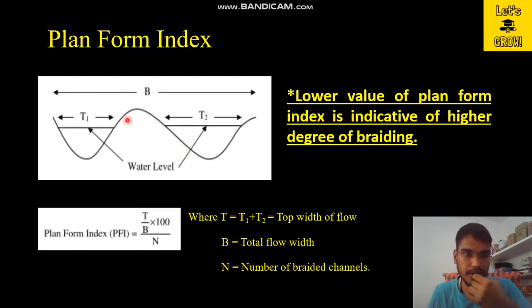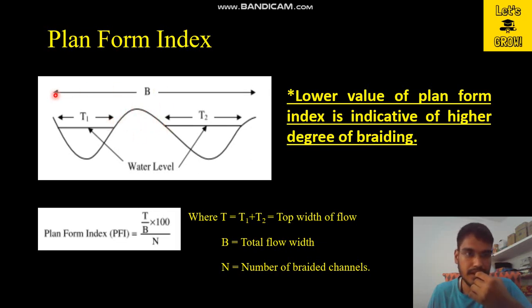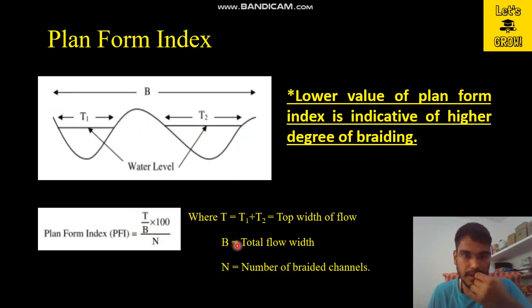Looking at the formula, in this image there are two channels — channel 1 and channel 2. The top width of channel 1 is T1, the top width of channel 2 is T2, and there is a small exposed bar between them. The total width of the river is B. The plan form index is calculated as (T / B) × 100 divided by N, where T is the total flow width (T1 + T2), B is the total width of the river, and N is the number of braided channels — here there are two braided channels.